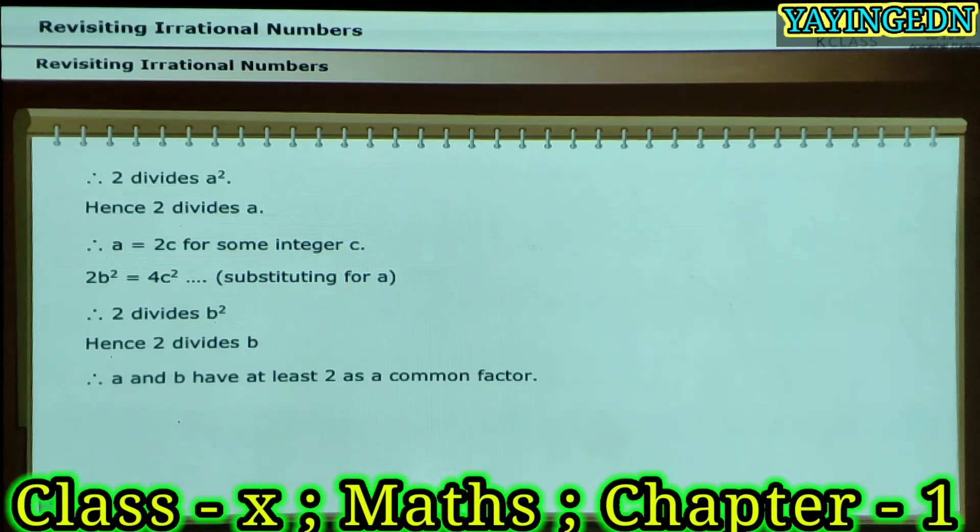Therefore, A and B have at least 2 as a common factor. This is a contradiction to the fact that A and B have no common factors other than 1.